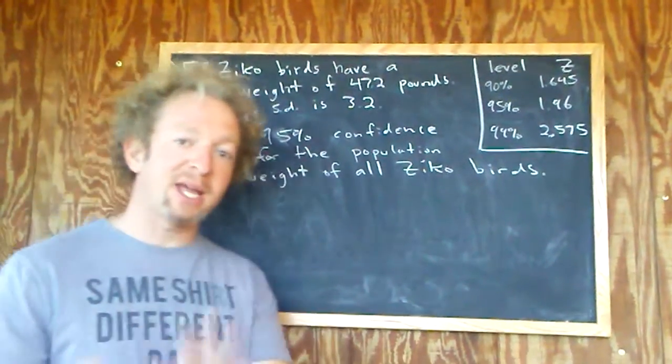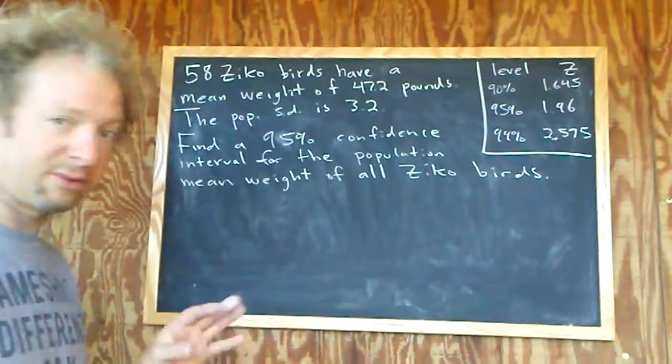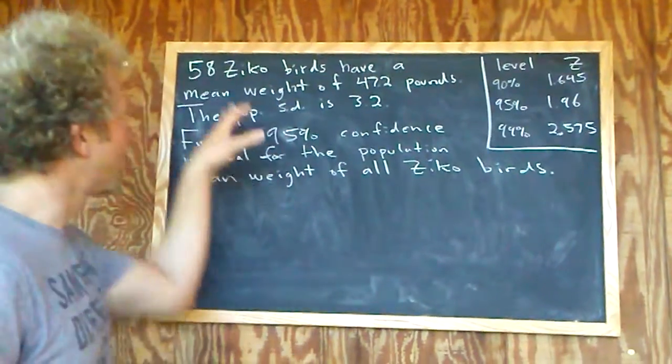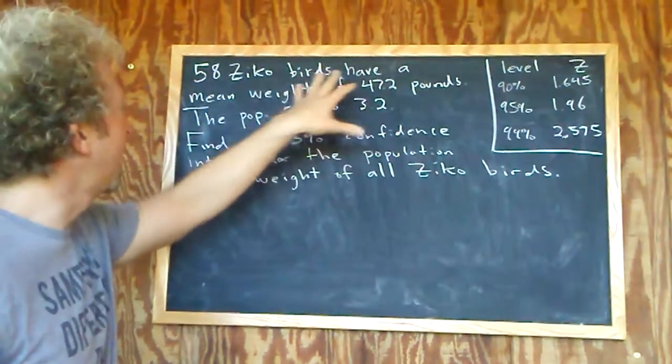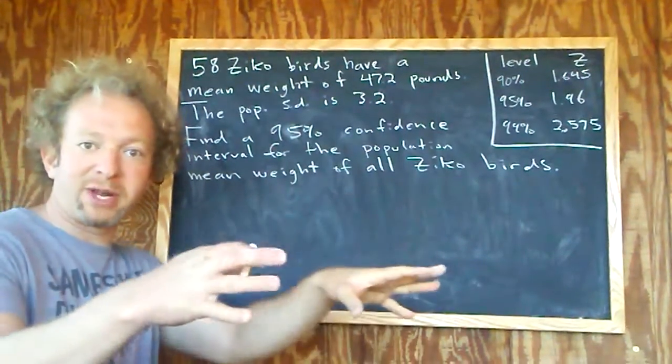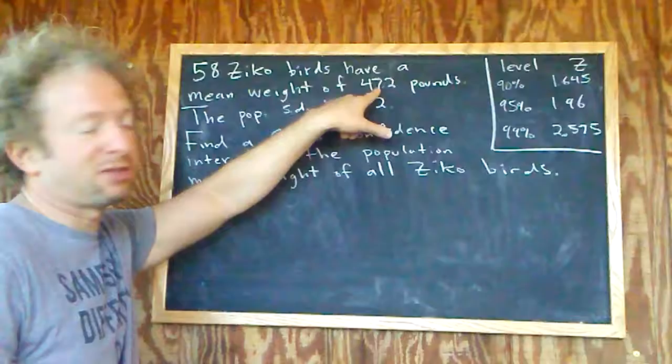We're going to find a confidence interval by hand and interpret it the correct way using the normal distribution. We have 58 Zika birds with a mean weight of 47.2 pounds. We took 58 birds at random and this is their average weight, so this is the sample mean.